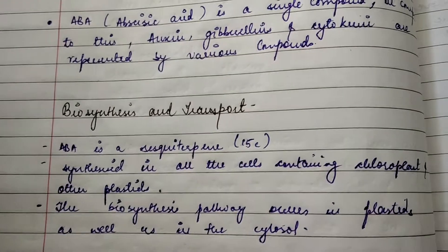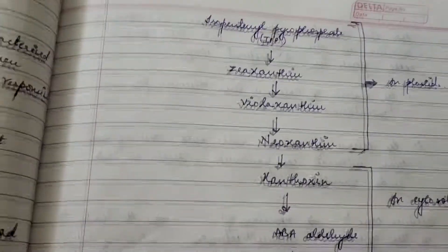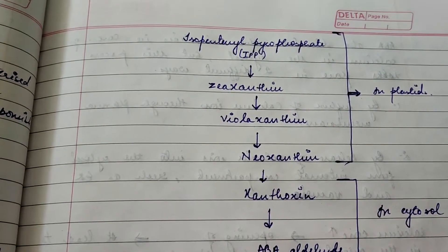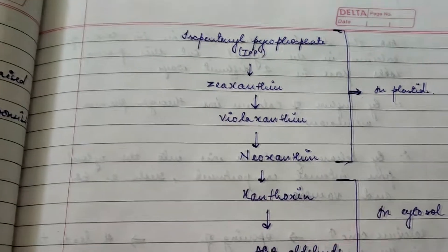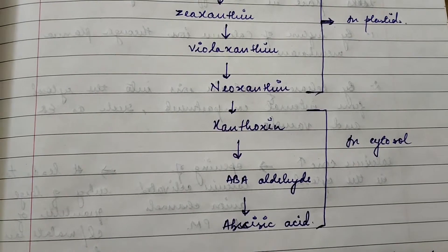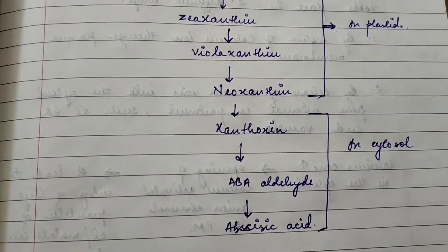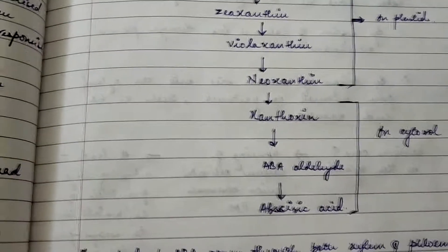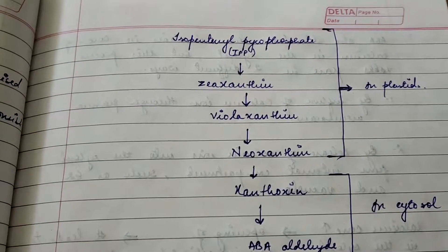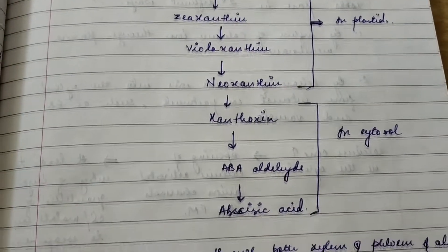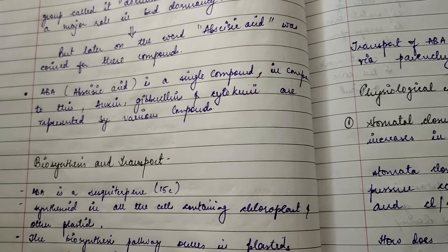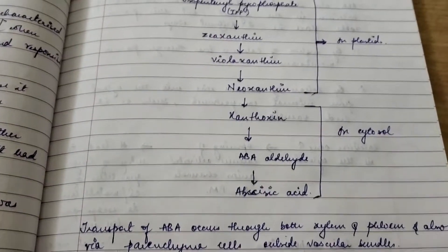The basic flowchart of biosynthesis is: from IPP (isopentanyl pyrophosphate), zeaxanthin is formed; from zeaxanthin, violaxanthin; and then neoxanthin is formed. These first conversions take place in the plastids. Then from neoxanthin it converts to xanthoxin, then ABA aldehyde (abscisic aldehyde), and then abscisic acid is formed. The precursor of abscisic acid is isopentanyl pyrophosphate, and the final steps occur in the cytosol. Biosynthesis occurs in all cells where chloroplasts and other plastids are present.